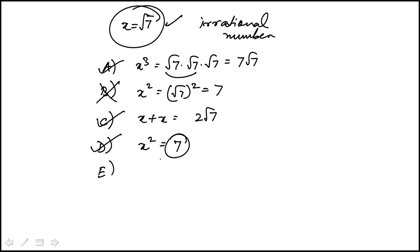And then x plus x is a rational number. x plus x would be 2 root 7, which is not rational, so E is out. So we have 3 left here, and I need to come up with more examples.